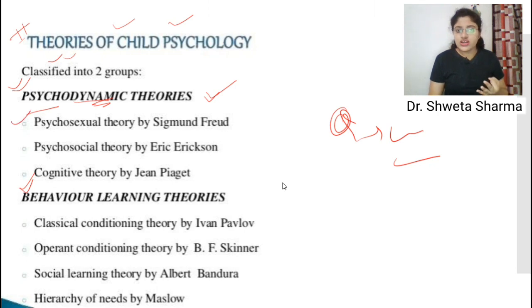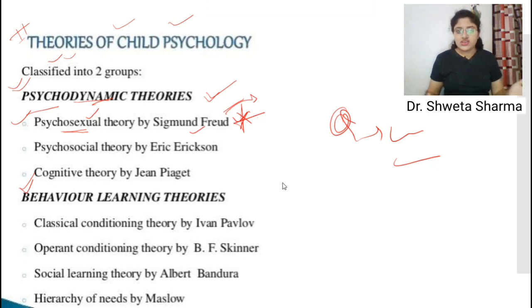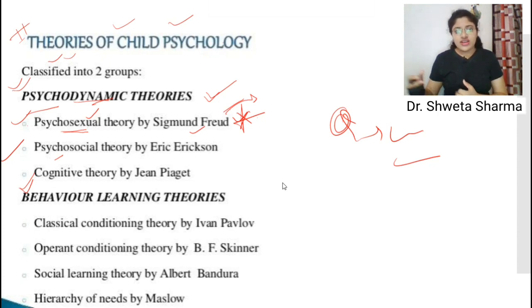The first psychodynamic theory is the psychosexual theory given by Sigmund Freud, which is the most important theory. Psychosexual means this theory is explained on the basis of sexual characteristics, though a drawback is that child psychology cannot be divided solely on this basis. Second is psychosocial theory — how a child socializes in life — given by Erik Erikson. Third is cognitive theory by Jean Piaget.